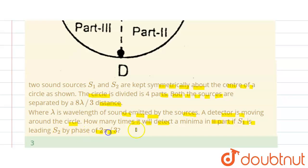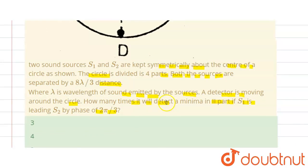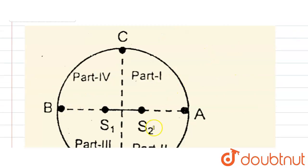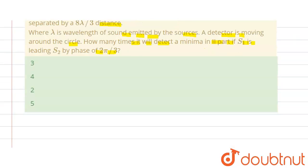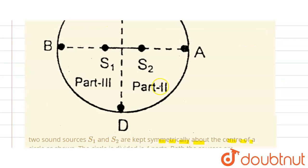So here we have to find how many times it will detect a minima in part two if S1 is leading S2 by phase of 2π/3.